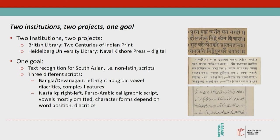The Nastalik script is used within South Asia primarily for the Urdu language. It is written from right to left and is one of the main calligraphic script types for Persian and Urdu. As usual with Arabic scripts, vowels are not written except perhaps as diacritics. And the characters have three different forms depending on their position within the word: initial, middle, or final.